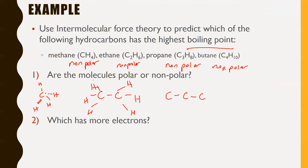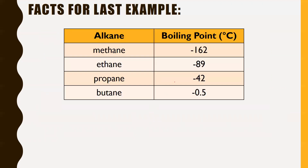Which has more electrons? Since we're dealing with the same elements — carbon and hydrogen — butane clearly has the most electrons. The number of electrons equals the atomic number, and we're counting all electrons, not just valence electrons. Indeed, butane has a boiling point of -0.5°C, whereas methane's boiling point is all the way down at -162°C. Butane, having the most electrons, has the highest boiling point, confirming our predictions.